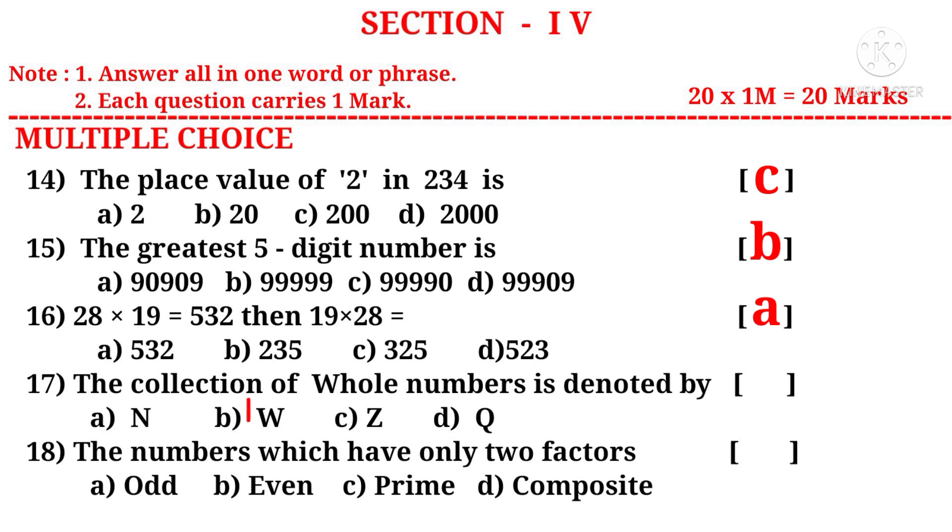The collection of whole numbers is denoted by its first letter W. So the correct choice is B. The numbers which have only two factors, that is one and itself, are called prime numbers. So the correct choice is C.